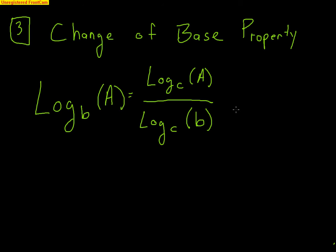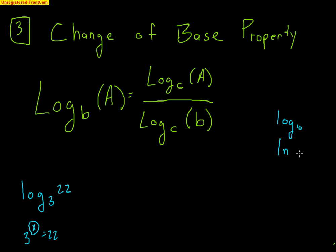This is a property that is really used for our calculator. For example, if we have log base 3 of 22 — meaning, what does 3 raised to what number equal 22? — we don't have a log base 3 button on our calculator. We have a log button, which is base 10, and a natural log button, which is base e. So I would do log base 10 of 22 divided by log base 10 of 3, and I would get my answer.